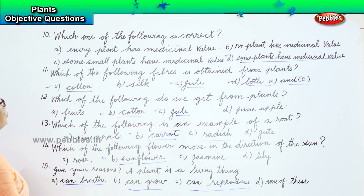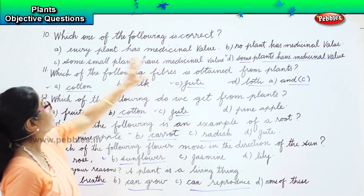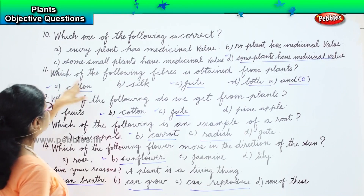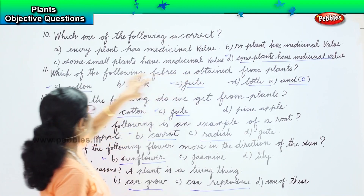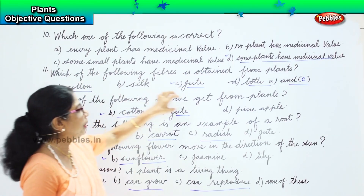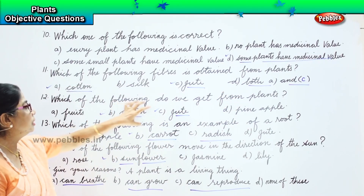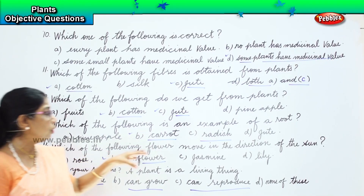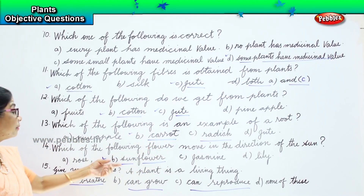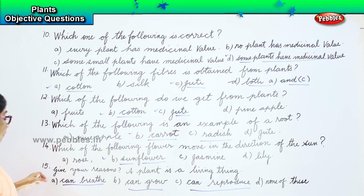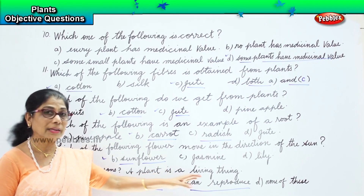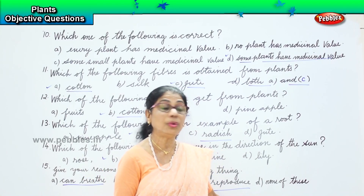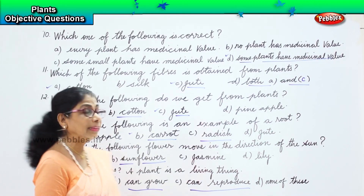Let's recap all the questions. Q10: which one of the following is correct? Only some plants have medicinal value. Q11: which fibre is obtained from plants? Both jute and cotton. Q12: which do we get from plants? Cotton and jute. Q13: which is an example of a root? Radish and carrot. Q14: which flower moves toward the sun? Sunflower. Q15: a plant is a living thing because it can breathe, it can grow, and it can reproduce.